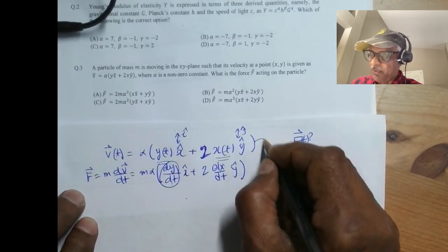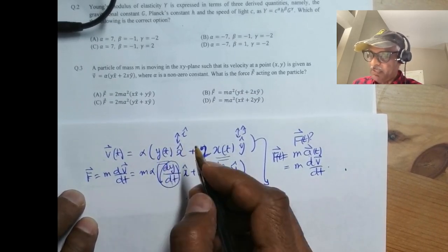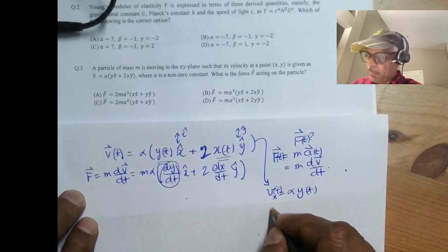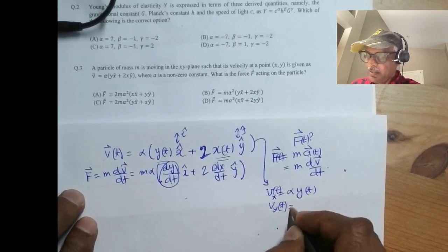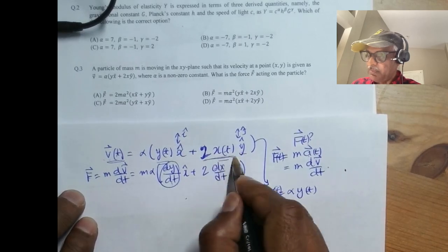Now what is this? This is the y component of v. So from here vx is the x component, so that's alpha yt. What's vy? It's the y component of this velocity, and this with an alpha.